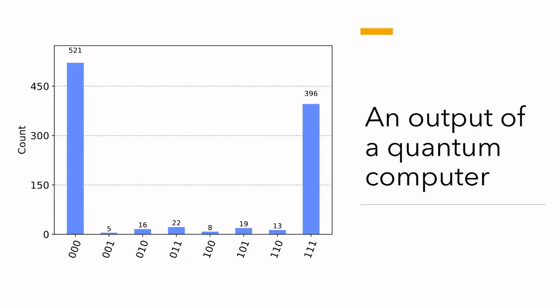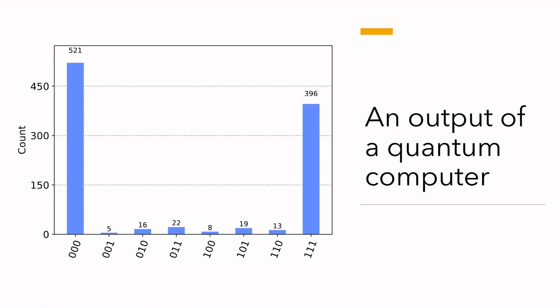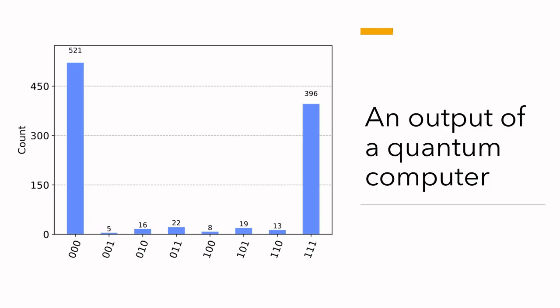What happens if we send this to a real computer? Are we going to have the same output? We can see that when we send this to a real computer, the output is completely different. For instance, 000 has significantly more probability than 111. But not only that — we also have impossible states. There are states like 001 or 110 that shouldn't be there, but are actually represented with some probability. This is because of the decoherence of the qubits, and this is something that is going to affect your potential quantum computers in the future.